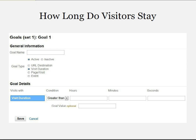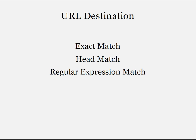You can also track how long people are staying on your blog. Give that goal a name, click the visit duration, and then enter the time. For URL goals there are three different types: exact match, head match, or regular expression match.